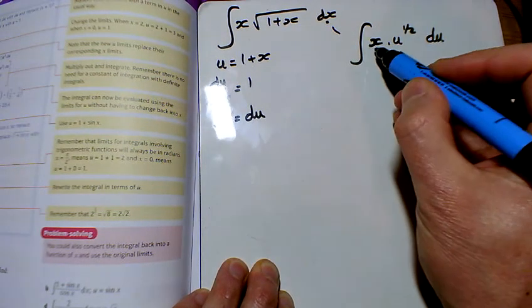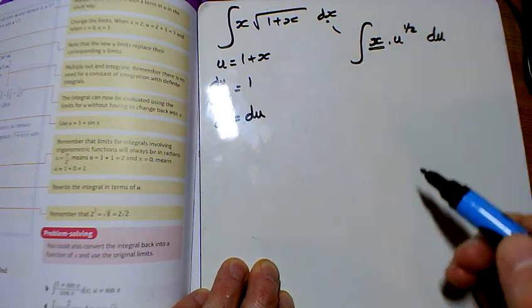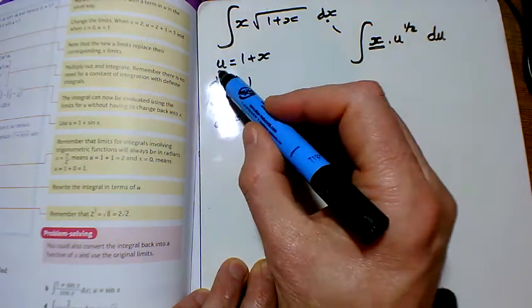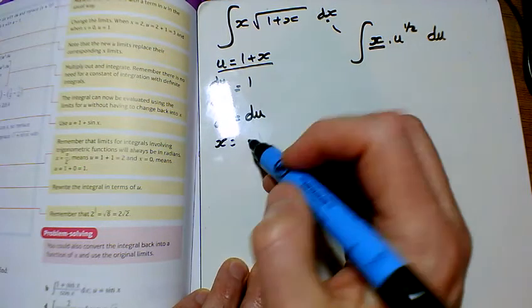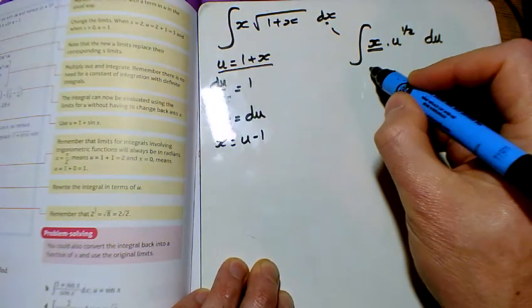So the integral we're trying to do is u take away 1 times by u to the power of a half du.